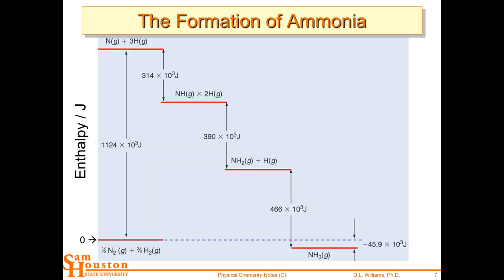Here's an example: the formation of ammonia. If we don't know that delta H directly, we use tables. We dissociate N₂ and H₂ into their atoms, then form one NH bond, then a second, then a third to produce NH₃. The sum of all those steps gives us our delta H of reaction.